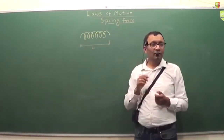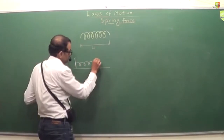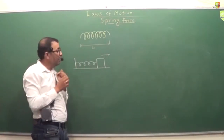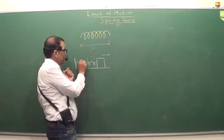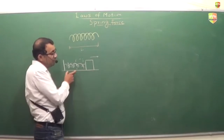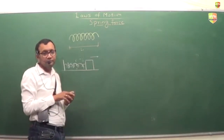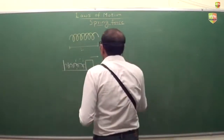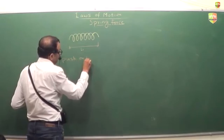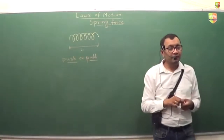Whatever is connected at the two ends will also feel the force. So suppose it is like this — if I pull the block, spring will try to pull it back. And if I compress the block, it will try to push. If a mass is compressed, it will get a force this way, because it is connected to the spring and the spring is trying to regain its original length. So the spring can apply push or pull, both, depending on whether it is stretched or compressed.